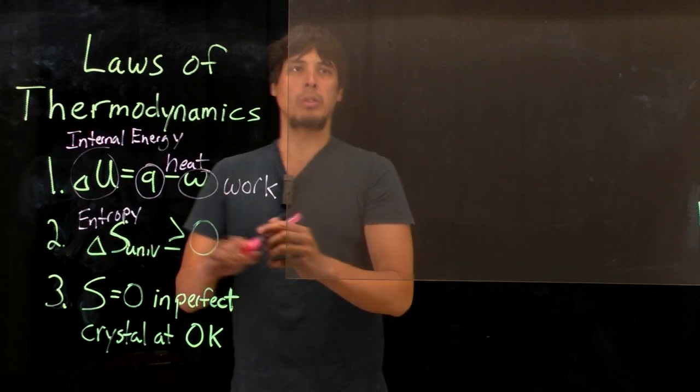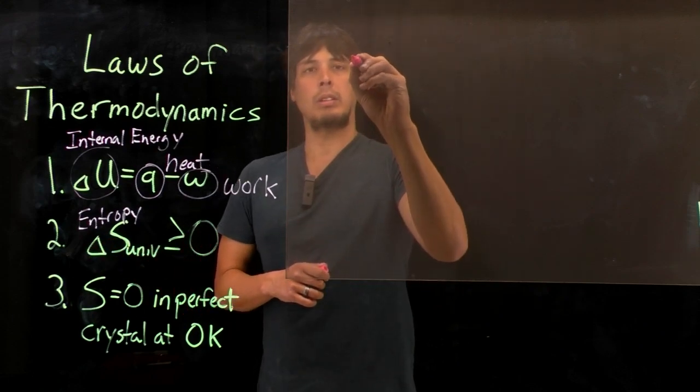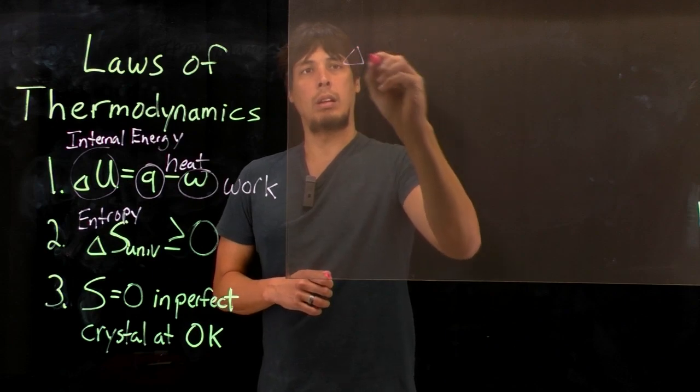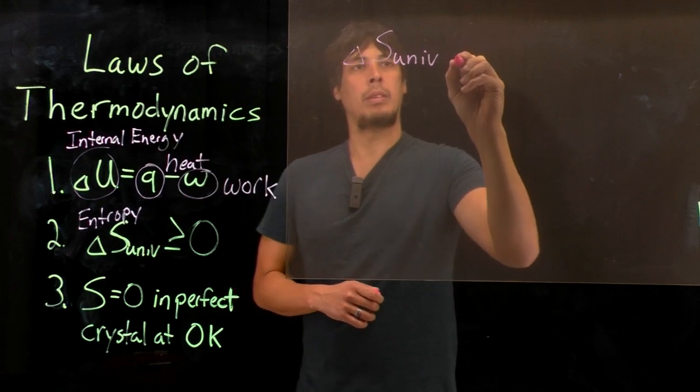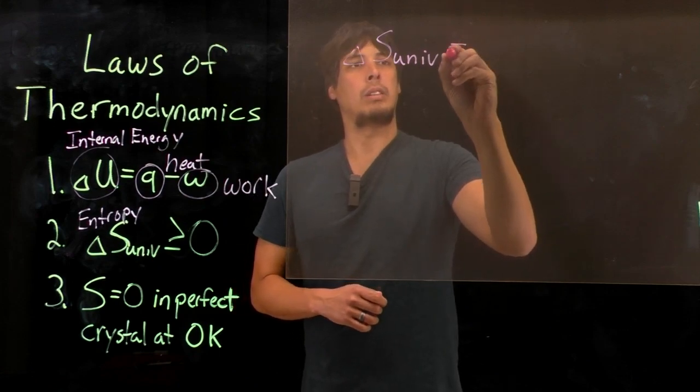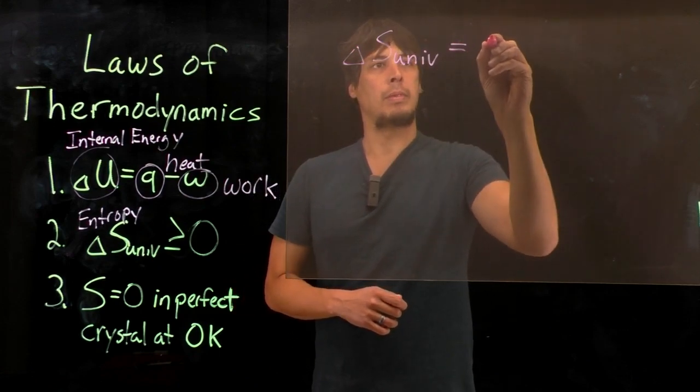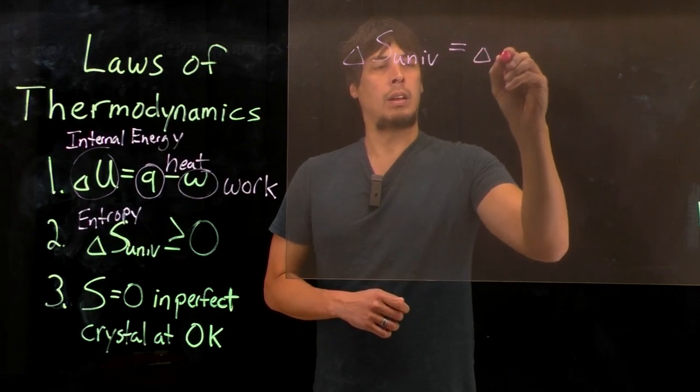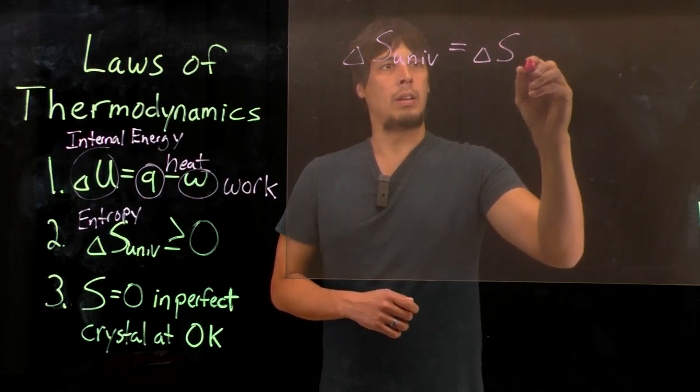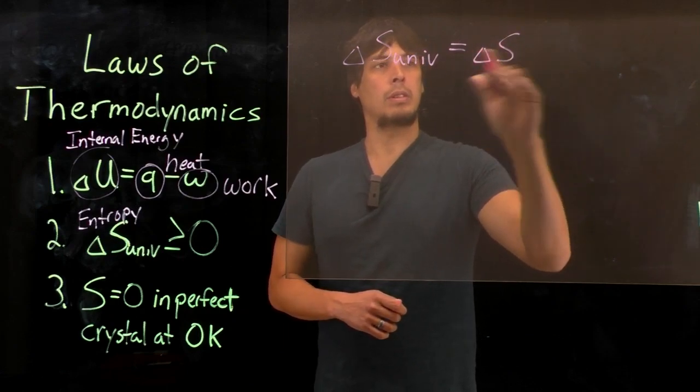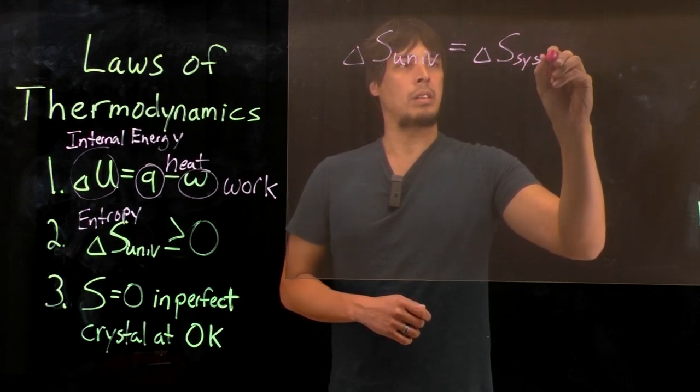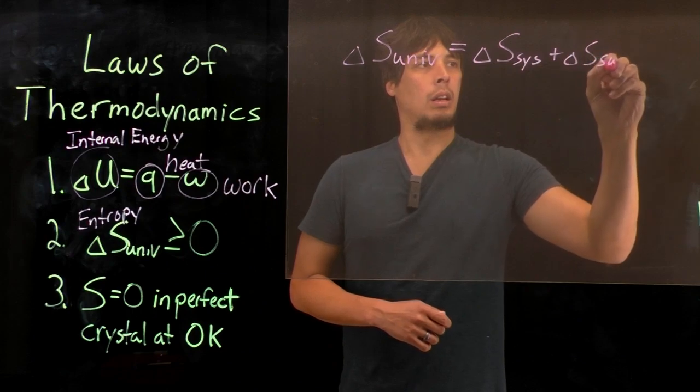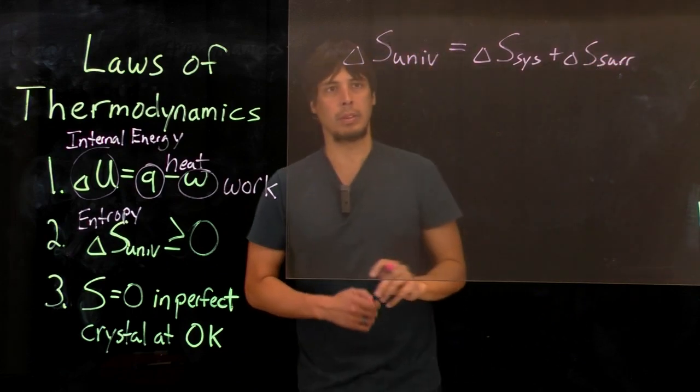So let's look at number two, specifically. If we look at this more in depth, another way to write this is that the change in entropy of the universe is equal to the change in entropy of the system, plus the change in entropy of the surroundings.